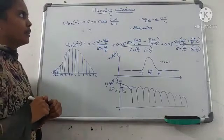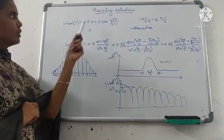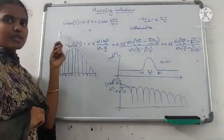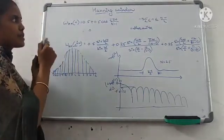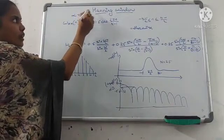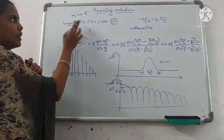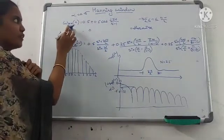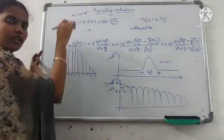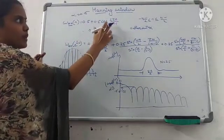The next window is the Hanning window technique. This Hanning window equation came from the raised cosine window equation. Substituting alpha equal to 0.5 in the raised cosine window equation, you get the Hanning window. W_H of n is equal to 0.5 plus 0.5 cos(2πn / (N−1)).